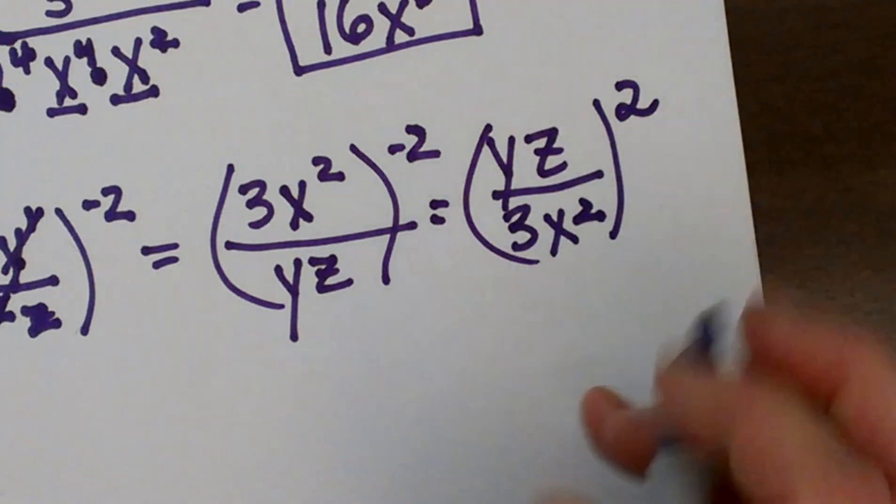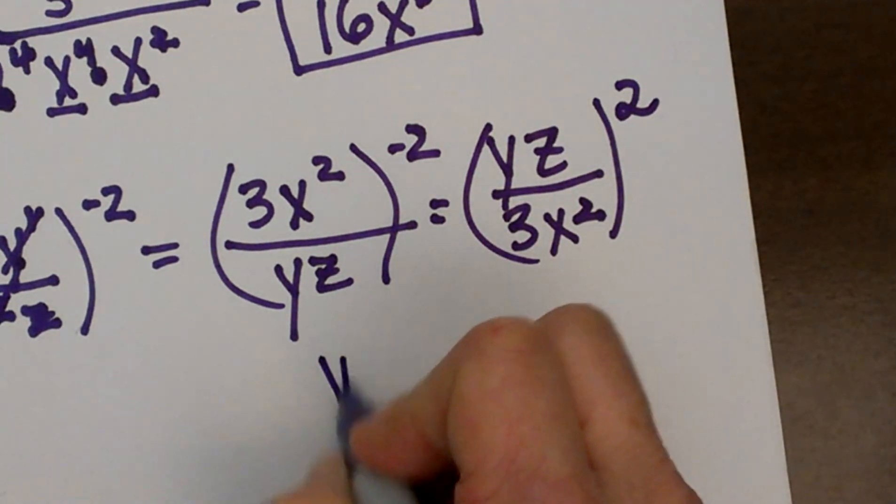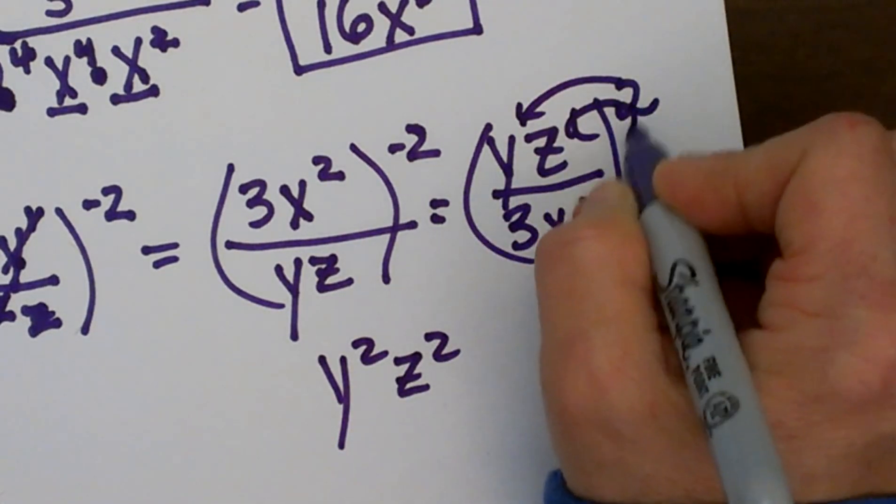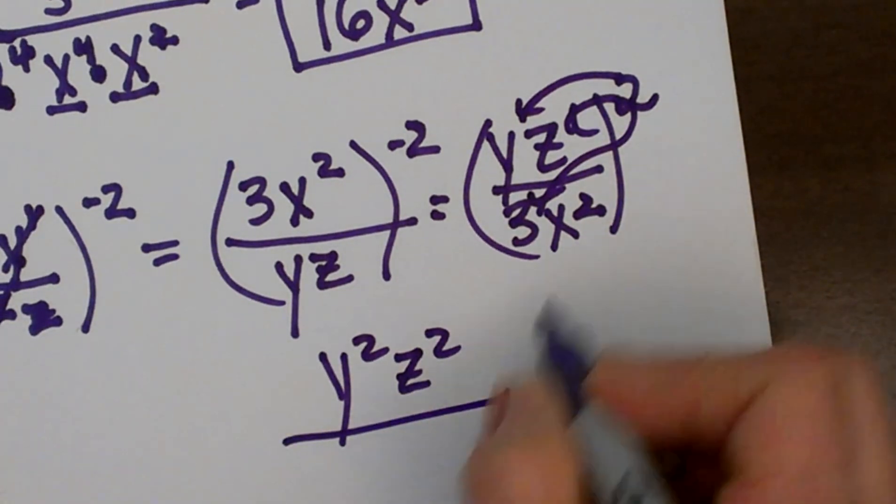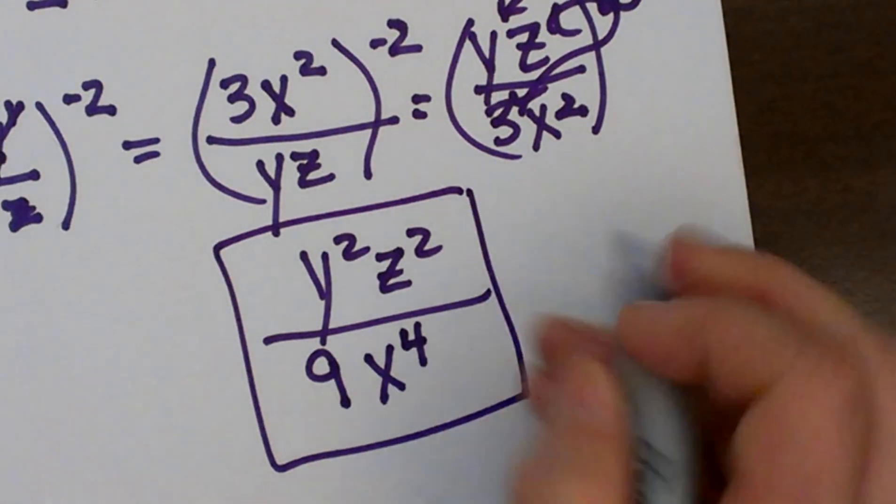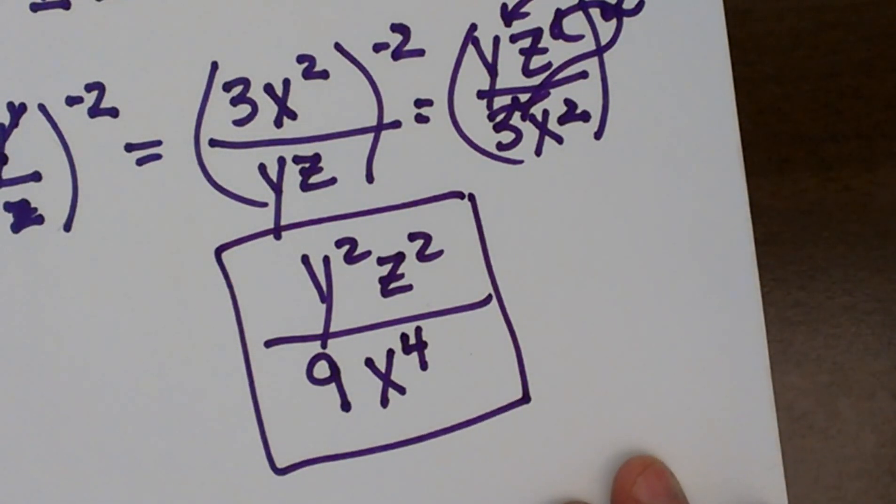Now I'm going to square everything. So y^2, z^2, so I'm just basically squaring every term inside here. Don't forget to square the 3, so that's 9, and then (x^2)^2 is x^4. And there you go. So that's what that one would simplify to. I hope this video was helpful.